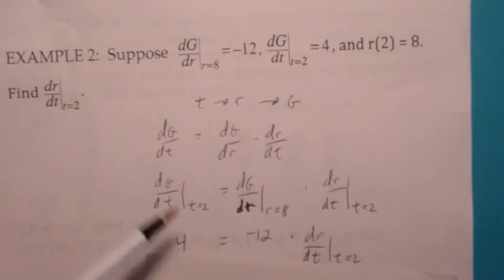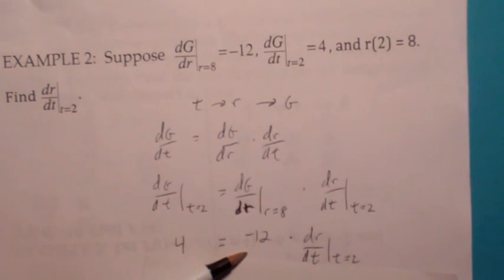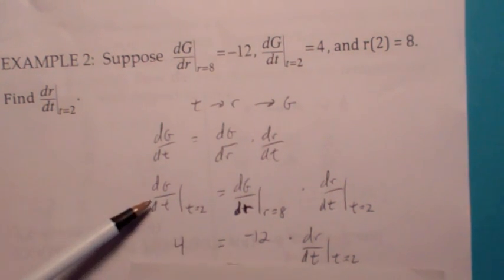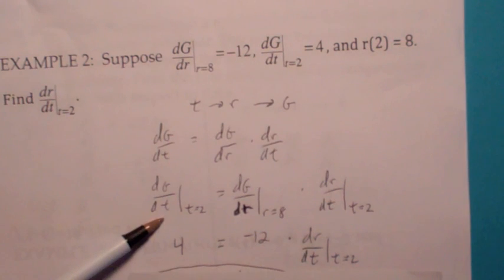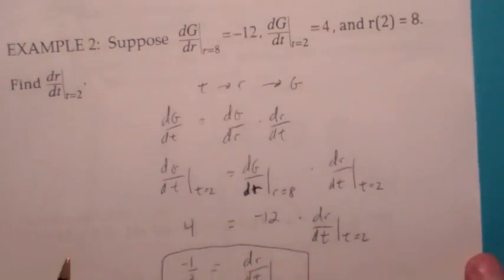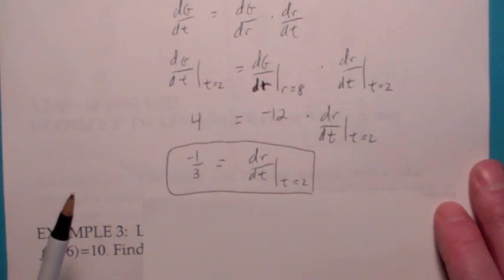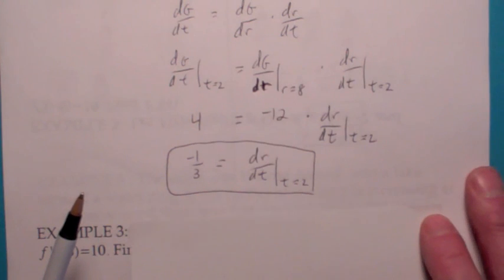You're given dg/dr when r equals 8 is negative 12, and dg/dt when t equals 2 is 4. When you divide by negative 12, you get that dr/dt when t equals 2 is negative one third.